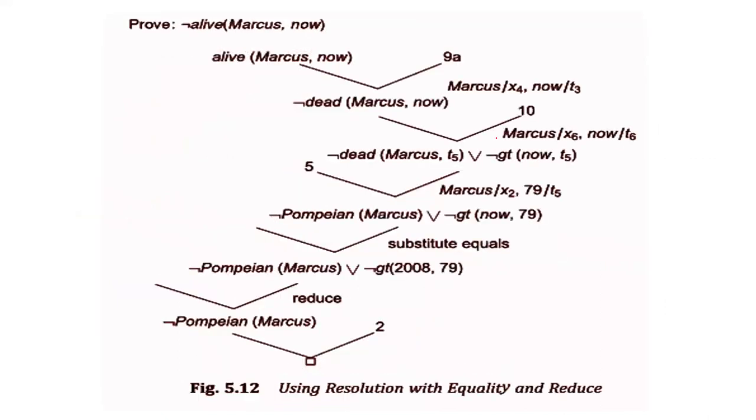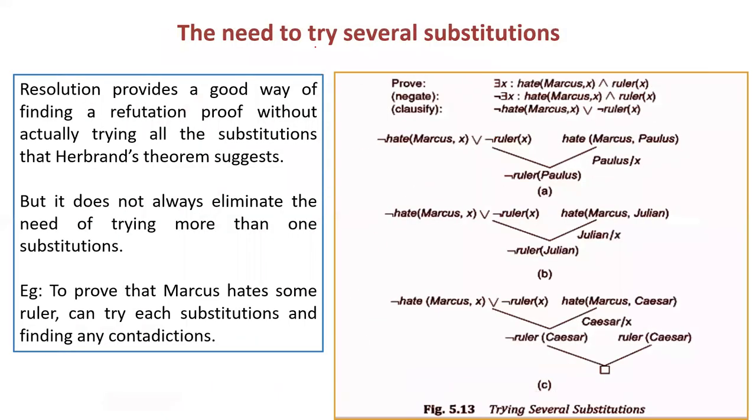The next concept is why you have to try several substitutions. Because resolution provides a good way of finding a substitution without actually trying all substitutions that the Herbrand theorem suggests, but it does not always eliminate the need to find more than one substitution. So to prove that, you can try to choose substitution and find any contradiction. You can find various several substitutions.